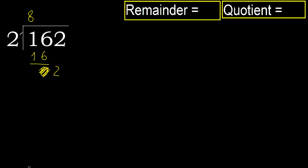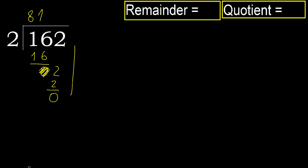2 multiplied by 2 is 4 — that is greater. Multiplied by 1 is 2 — 2 is not greater. 2 minus 2 is 0. Next, there is no number remaining, therefore finish. The division is complete.